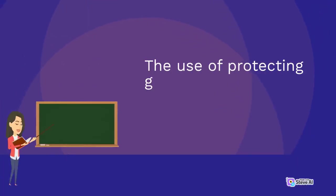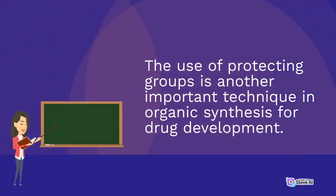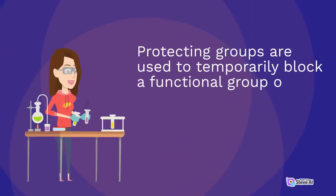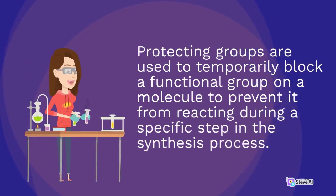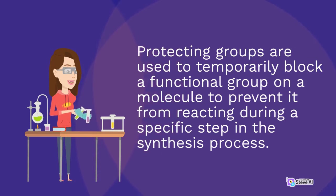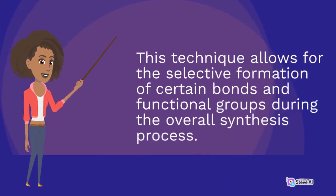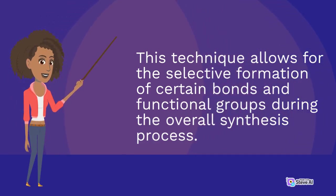The use of protecting groups is another important technique in organic synthesis for drug development. Protecting groups are used to temporarily block a functional group on a molecule to prevent it from reacting during a specific step in the synthesis process. This technique allows for the selective formation of certain bonds and functional groups during the overall synthesis process.